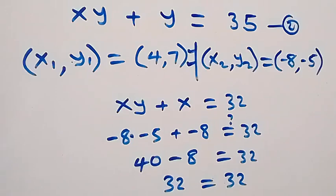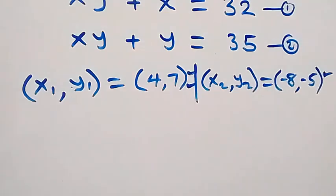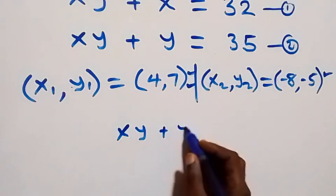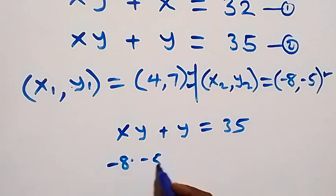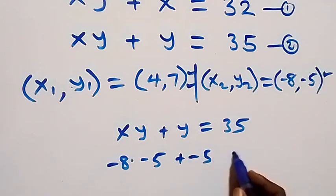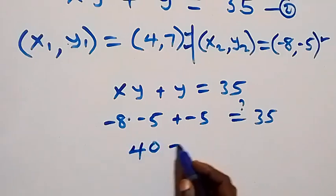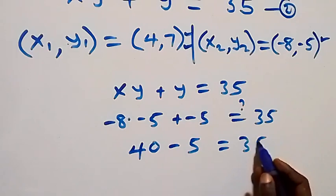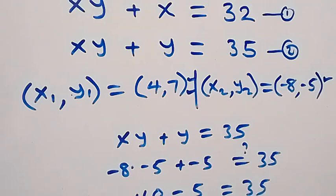Substituting (−8, −5) into equation two — xy plus y equals 35 — we get negative eight times negative five plus negative five equals 35. That is 40 minus 5 equals 35, which is 35. Left hand side equals right hand side, so this also satisfies equation two.